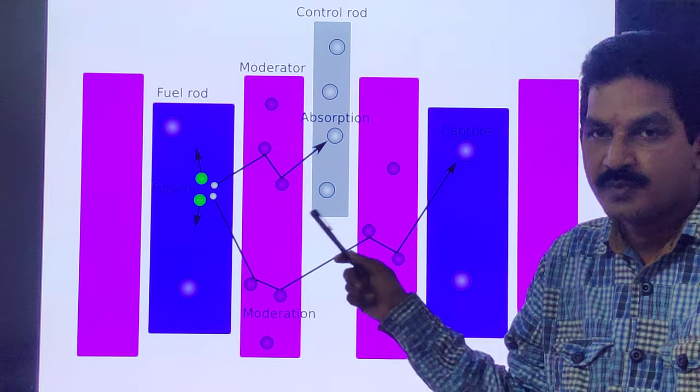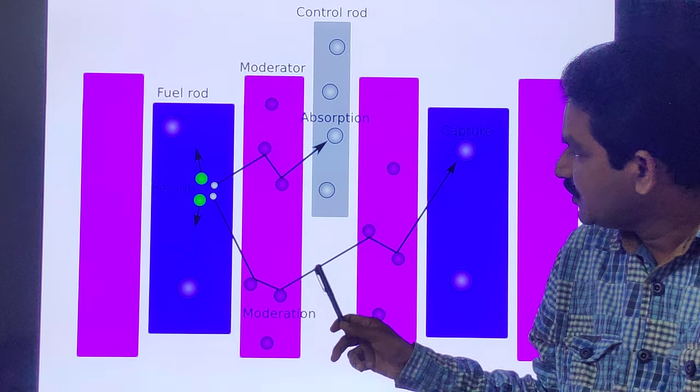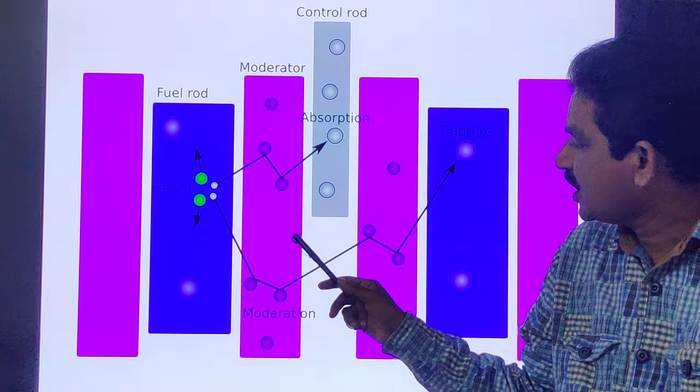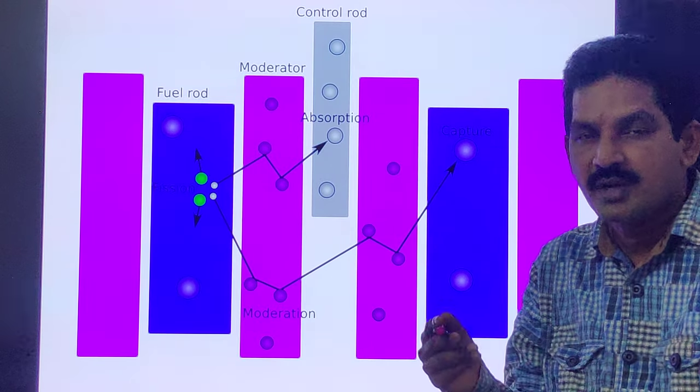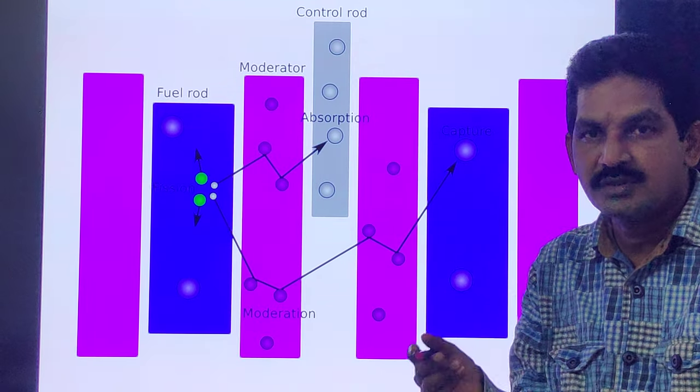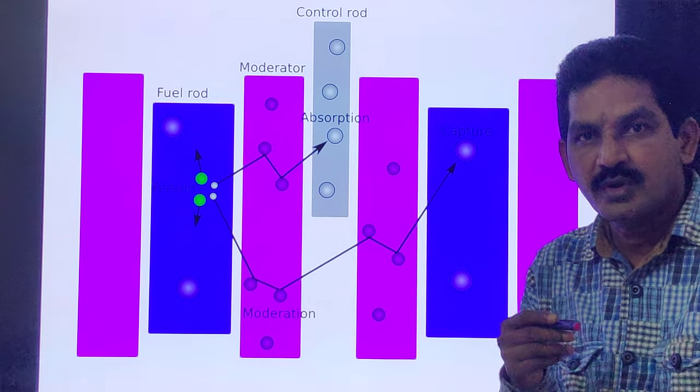The chain reaction proceeds slowly. Some of the neutrons produced during the fission will be partly absorbed by the fuel elements, moderator, coolant, and other materials. The remaining neutrons will try to escape from the reactor and will be lost.